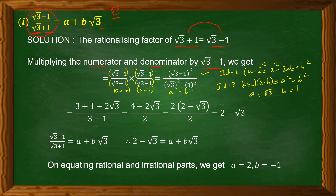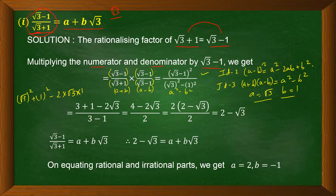Solving the numerator using Identity 2: (√3 − 1)² = (√3)² + 1² − 2·√3·1 = 3 + 1 − 2√3 = 4 − 2√3. In the denominator: (√3)² − 1² = 3 − 1 = 2. So we have (4 − 2√3) / 2. Taking 2 as common in the numerator gives 2(2 − √3) / 2, and the 2s cancel, leaving 2 − √3.